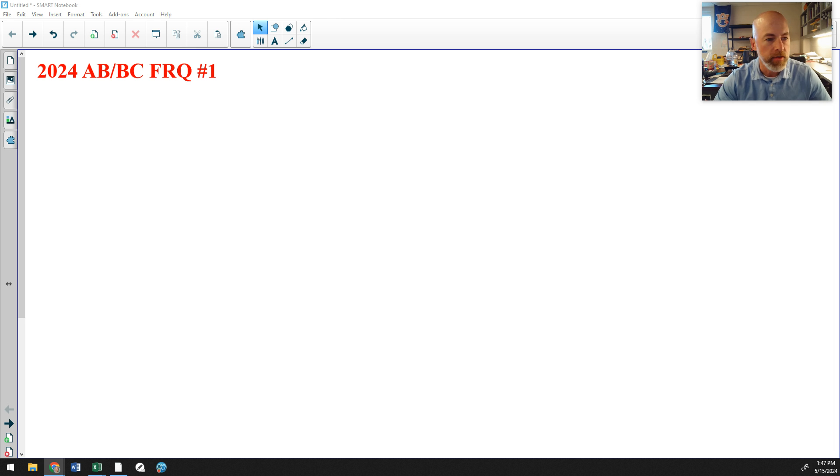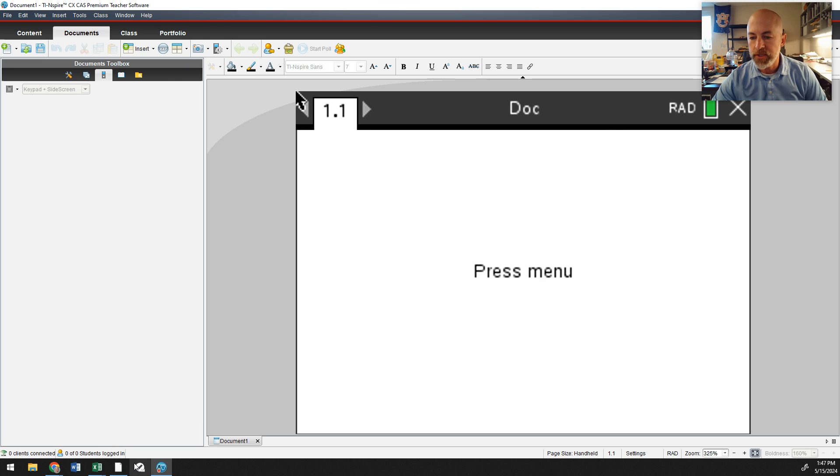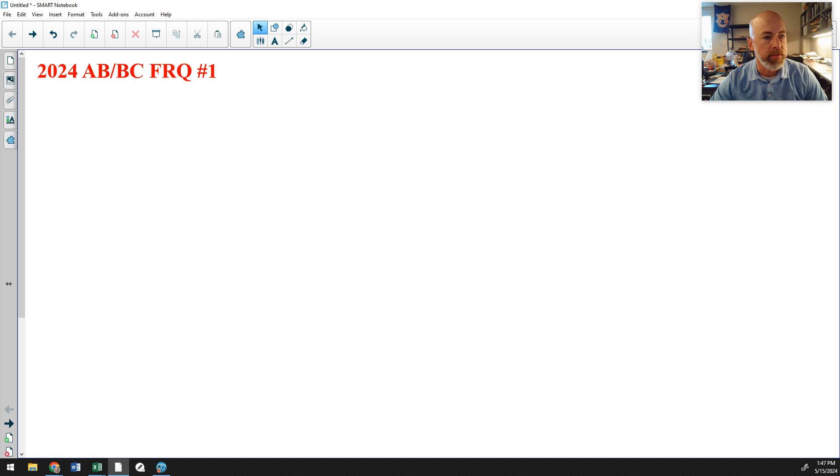So here's number one. This is a common question with A, B, and C. Let's see, we have a table, it talks about the temperature of coffee. My calculator just covered up the question. Let me zoom in so I can read this a little bit better. All right, so temperature of coffee at T minutes is a decreasing differentiable function C. C is measured in Celsius on the interval 0 to 12. Values of C are given in a table. Approximate C prime of 5 using the average rate of change. Okay, so A is a pretty straightforward question.